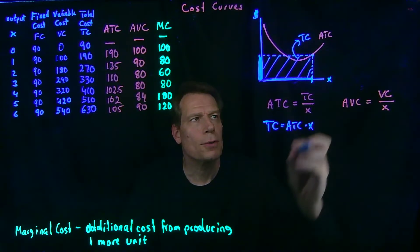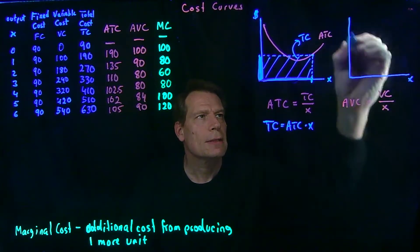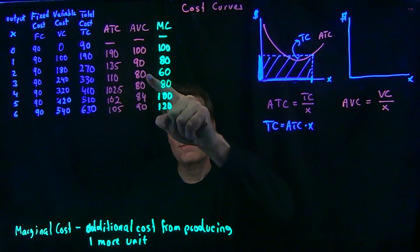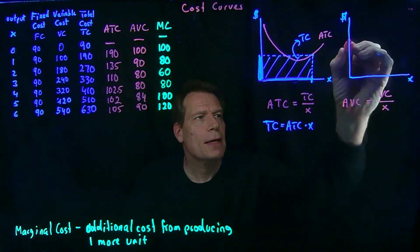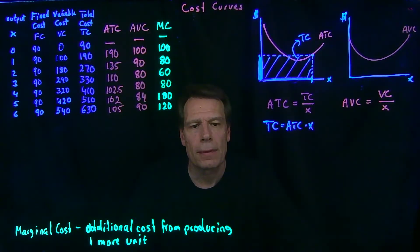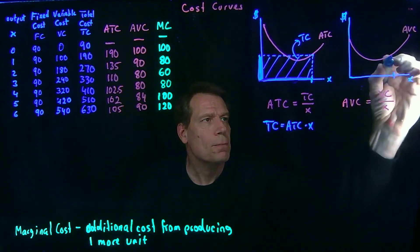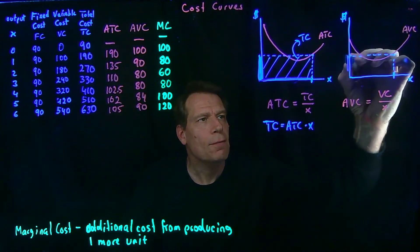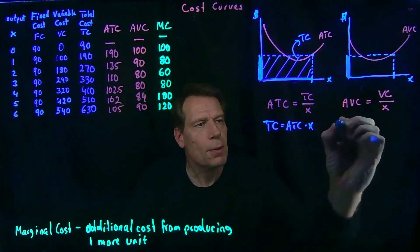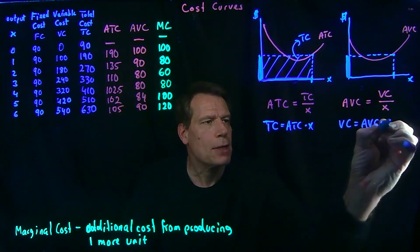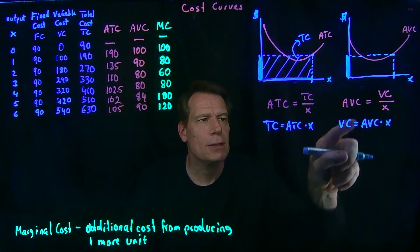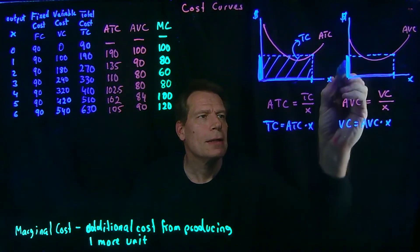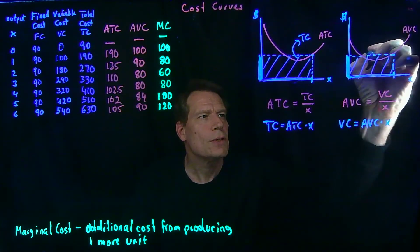We can do something similar for variable costs. In the graph with output on the horizontal axis and dollars on the vertical, we can draw our average variable cost curve. We see it starts high, it falls, and eventually it rises again — so we get something like a U-shape. If the firm is producing this much output, we use the average variable cost curve to find out what the average variable cost was — it's that vertical distance. The variable cost equals the average variable cost times output, so this distance times this distance gives us a rectangle which is the variable cost.